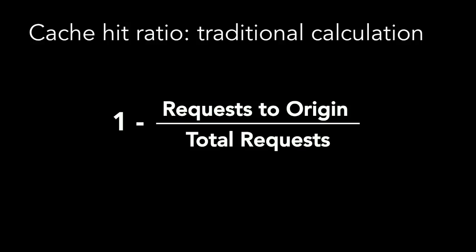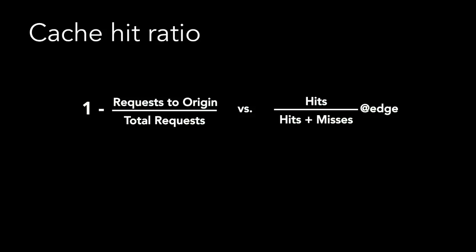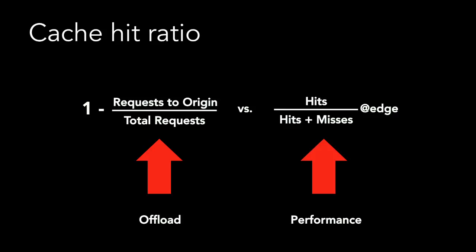You can see that it's a disservice to consider the entire chain as good as serving something from the edge. This traditional calculation isn't actually a good performance indicator. A better formula uses total requests as the number of hits and misses at the edge of the network. Now, this doesn't mean the old calculation is useless — they're both very useful. The old calculation is a great indicator for offload; it tells you how much traffic didn't make it to your origin. However, it is not a performance metric. This new formula is. It's important to get both from your CDN.